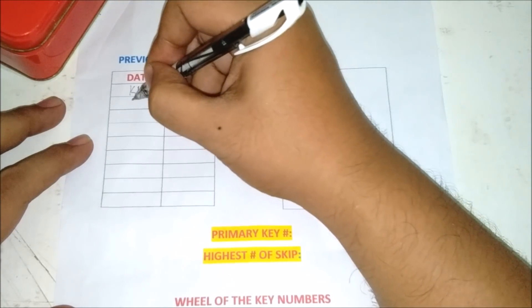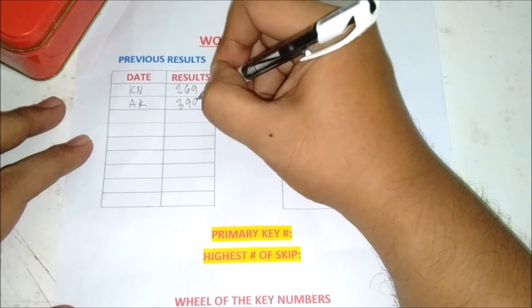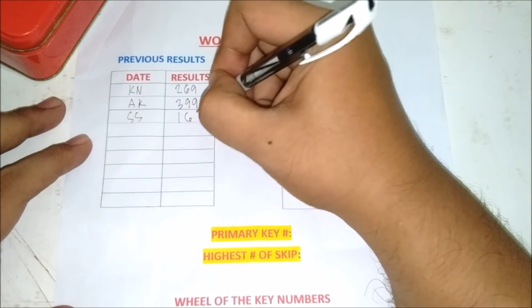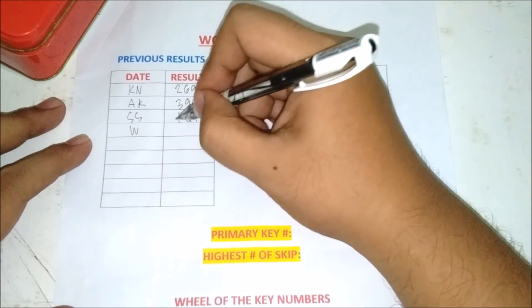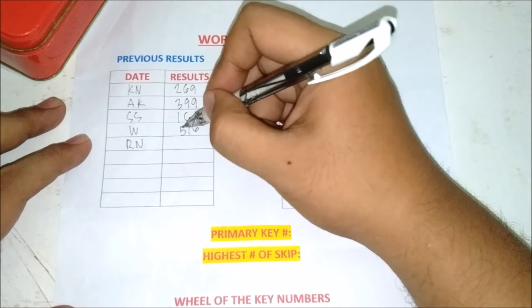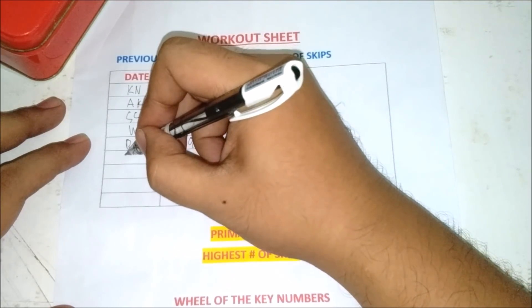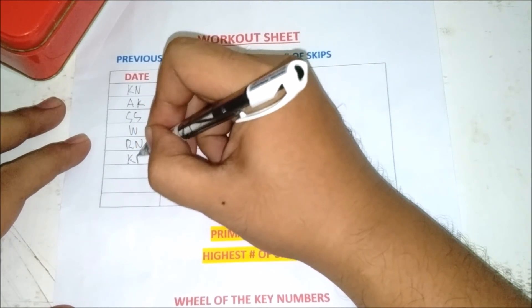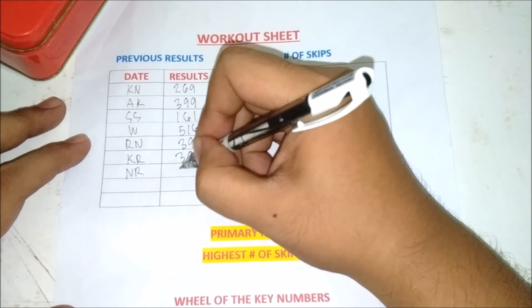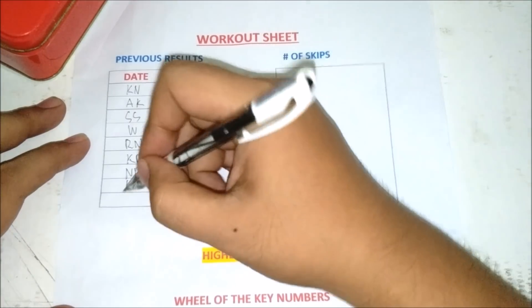So KN 269, AK 399, SS 161, W 516, RN 395, TR 399, NR 124, TN 268, AK 398.